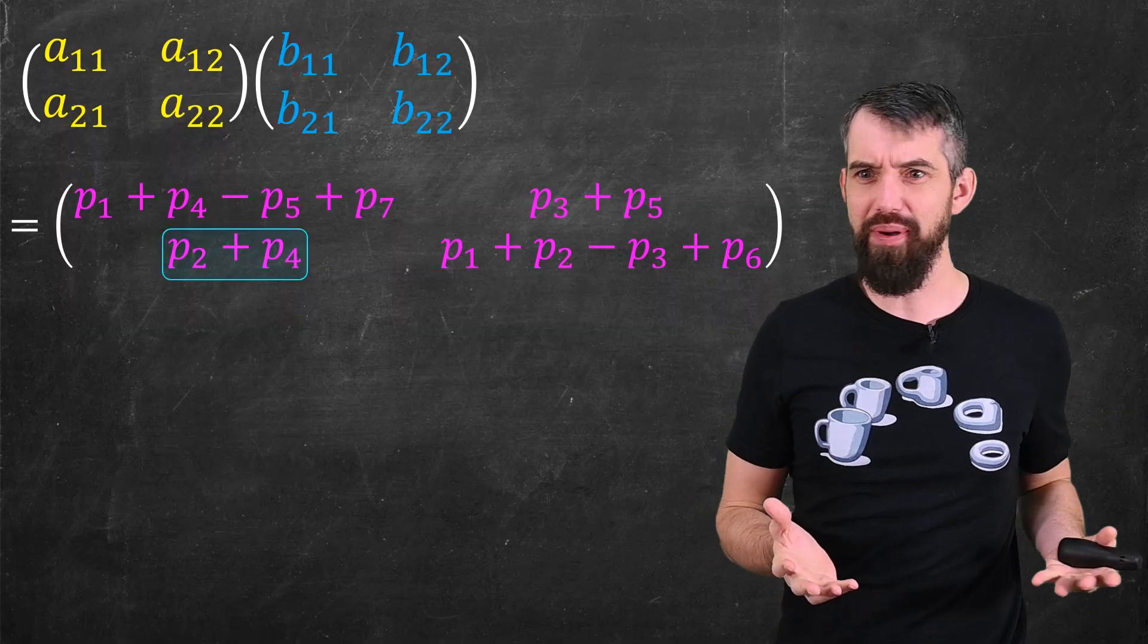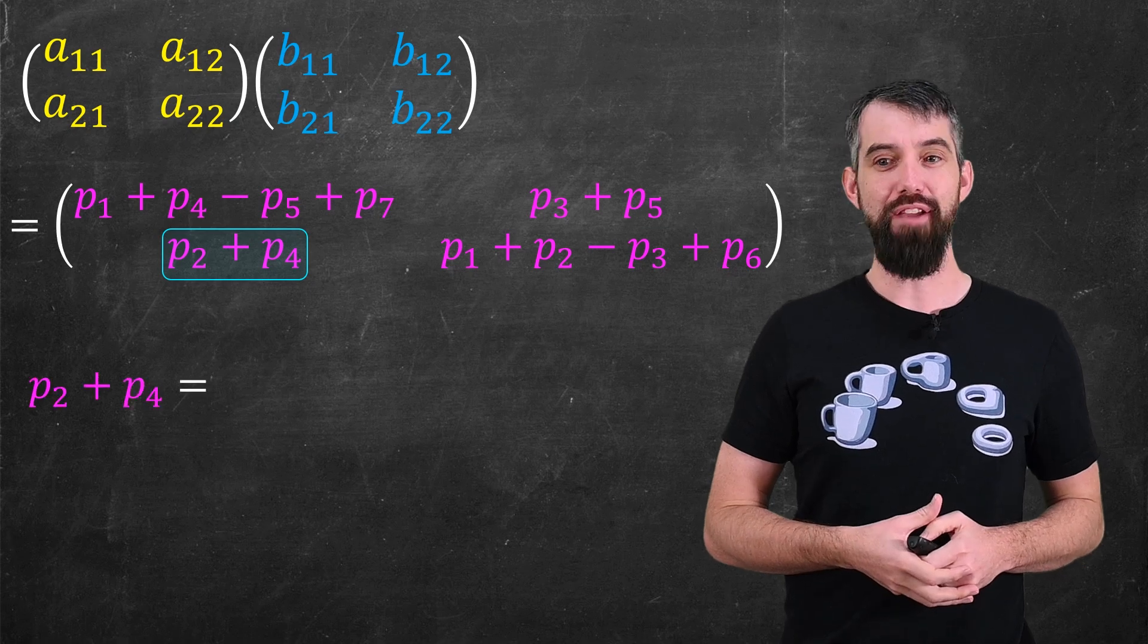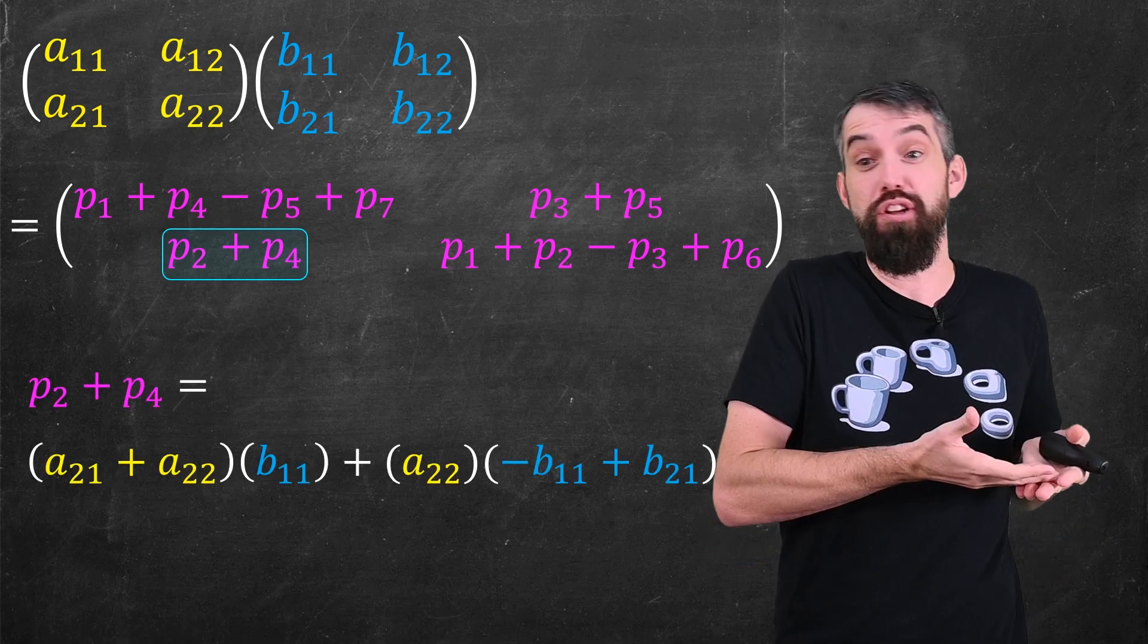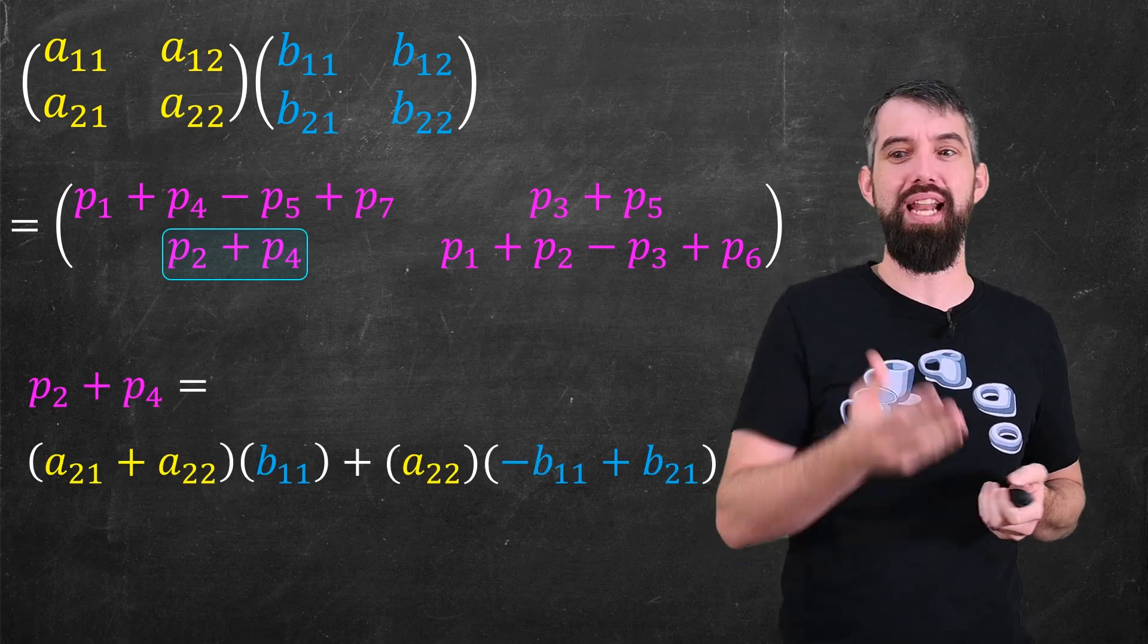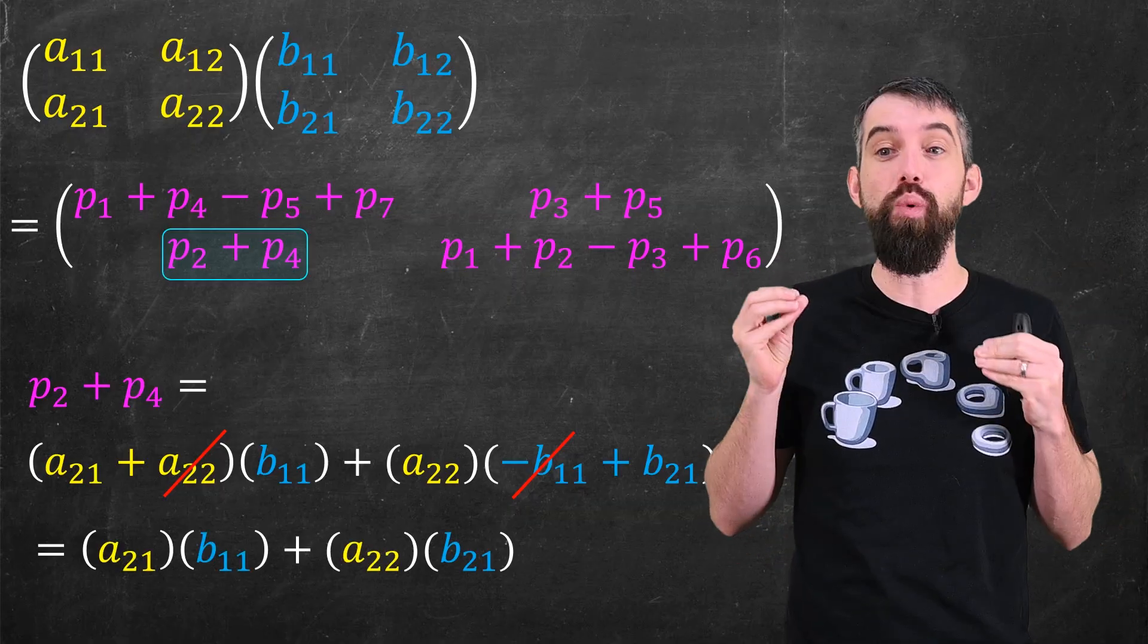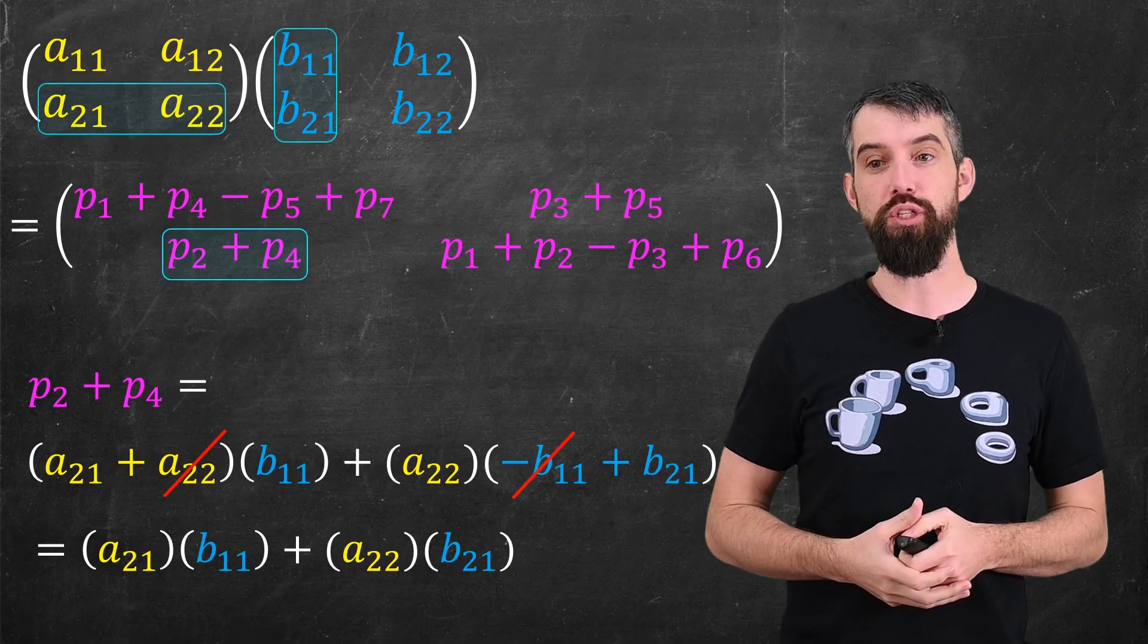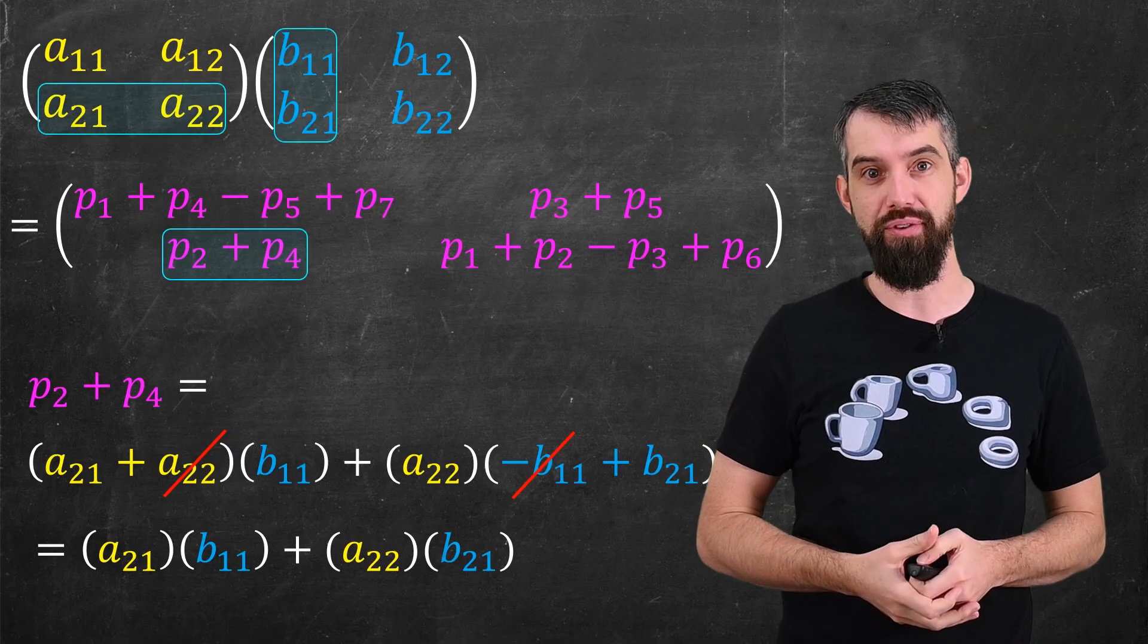You might not believe me, but let me just do one of these, like the p2 plus p4 that occurs down here. Well, if I expand this out into the definition of p2 and p4, you'll notice that I can cancel a couple of terms, and this leaves me just with exactly what I would have gotten if I multiplied them via the standard algorithm. So it really does work, and you can test them for all the other entries.